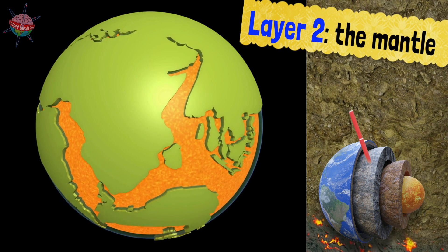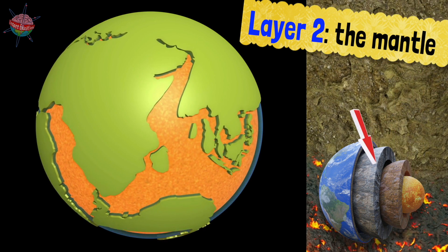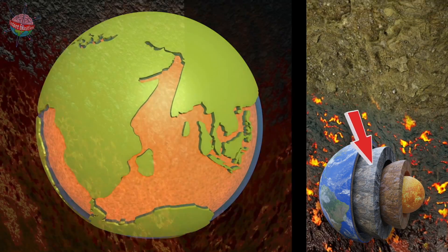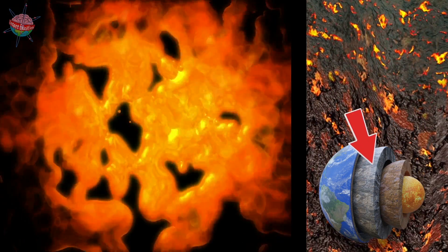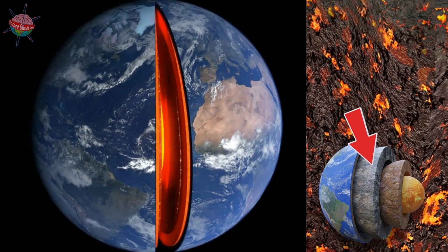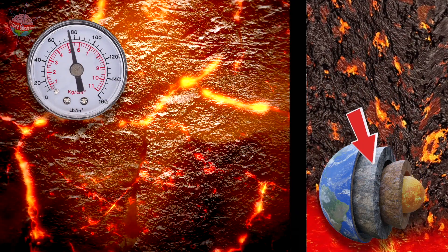The upper mantle starts with a solid layer, then a viscous mixture of both solid and liquid rock. The lower mantle is solid because it is under so much pressure.